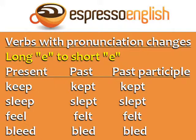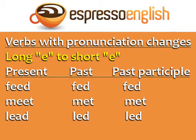Another group of irregular verbs is verbs with pronunciation changes. For example, long E to short E: Keep, kept, kept. Sleep, slept, slept. Feel, felt, felt. Bleed, bled, bled. Feed, fed, fed. Meet, met, met. Lead, led, led.